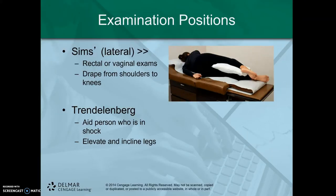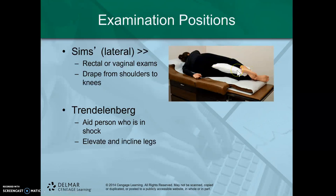Now let's talk about the Sims position, which is a much more common position for these types of exams. This one is side-lying, generally left side-lying if you can, but obviously if you need to see something on the left side, you would go right side-lying. The arm at the bottom comes underneath and behind the patient. The bottom leg is straight and the top leg is bent, with a pillow placed in between the knees, and that top knee comes over the bottom leg. You'll actually see a slight rotation in the patient, and this position presents the back side up a little bit, which is good for rectal exams. It's a comfortable and easy position for the patient to maintain.